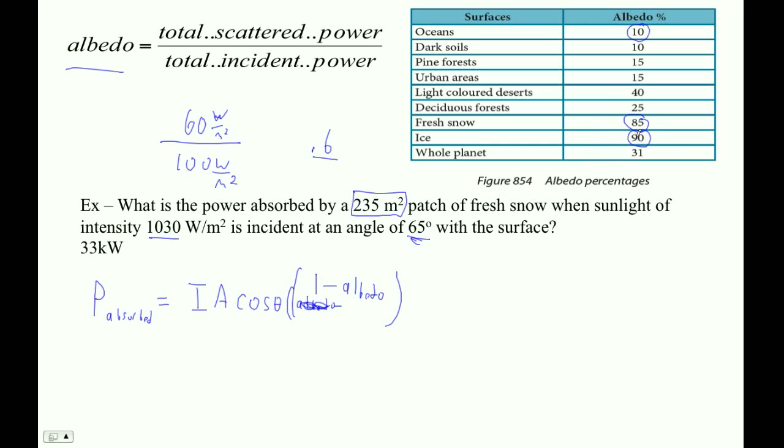So for ice, 1 minus 0.9, only 0.1 is absorbed. For water, 1 minus 0.1 is 0.9 absorbed.